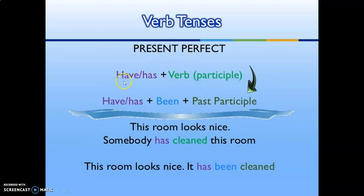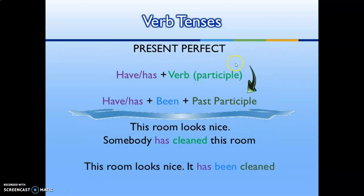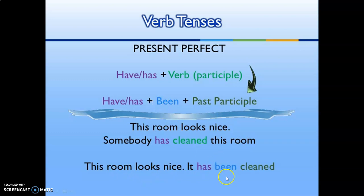For present perfect, the rule is 'have' or 'has' plus verb participle (active), and 'have' or 'has' plus 'been' plus past participle (passive). Example: 'Somebody has cleaned this room.' In passive: 'This room looks nice — it has been cleaned.' We use 'been' here with 'has' plus past participle. This is the present perfect.